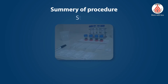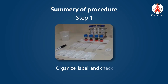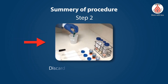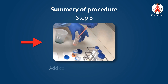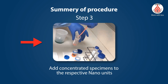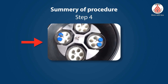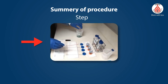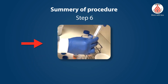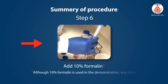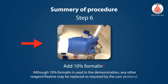Summary procedure. Step 1: Organize, label, and check. Step 2: Discard the green transport fluid. Step 3: Add concentrated specimens to the respective nano units. Step 4: Centrifuge at 2500 rpms for 3 minutes. Step 5: Discard the supernatant. Step 6: Add 10% formalin. Although 10% formalin is used in the demonstration, any other reagent or fixative may be replaced as required by the user protocol.